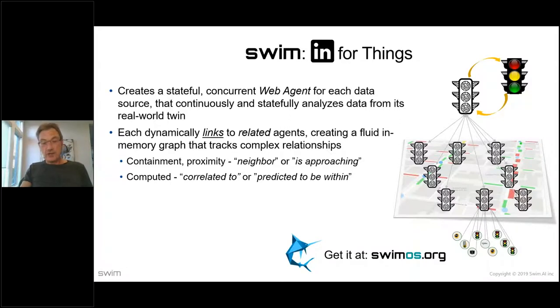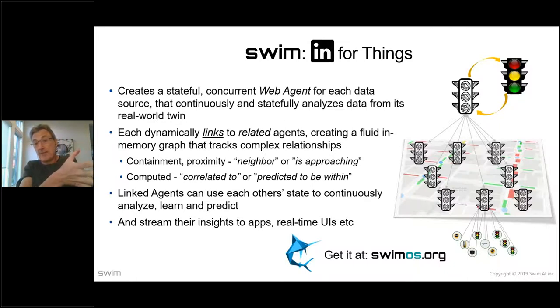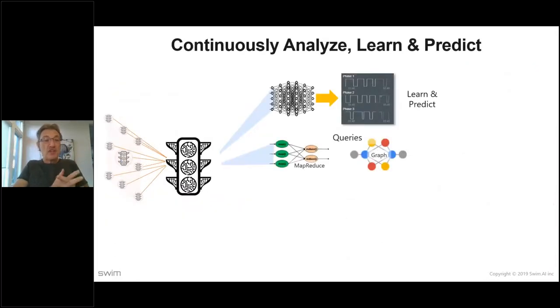And it will then link to other things in its world and we'll see some results. So web agents are actors. They are actors with a really critical modification. They don't use message passing. We use a different model entirely for state sharing. So linked agents use each other's state to continuously analyze, learn, and predict. So whatever I link to, I can see. I can see the state of other agents and use that in my own calculations to build relationships to analyze, learn, and predict. And then agents stream their insights. So one way you can think of Swim is this. It's kind of a smart application which sits in the way of a ton of data and turns a ton of data into vastly less as highly calculated, refined insights that are computed on the fly.